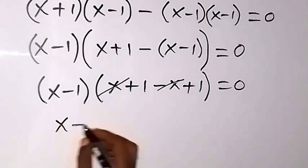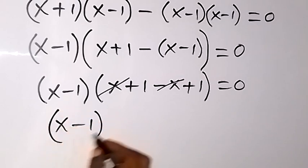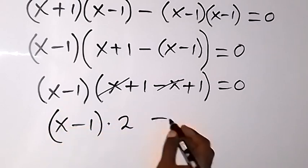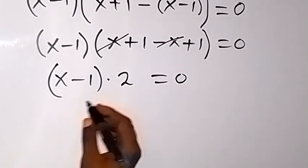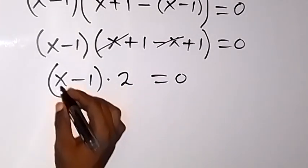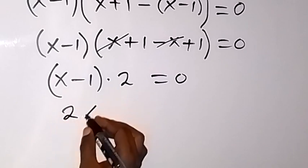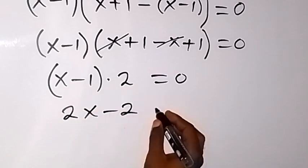So we have (x-1) multiply by 2 now equals zero. So let's use this 2 to multiply this bracket, and that will become 2x - 2 now equals to zero.